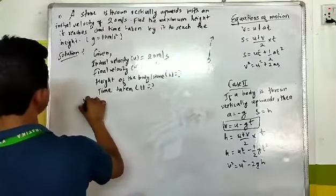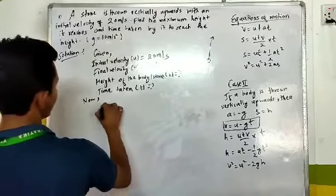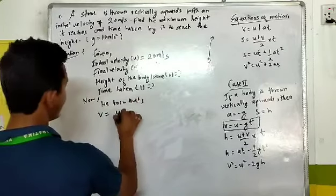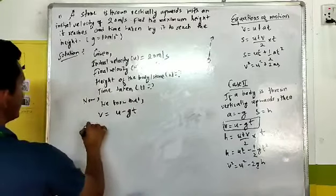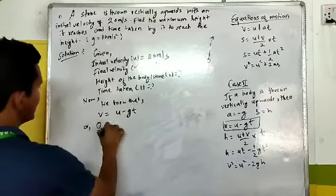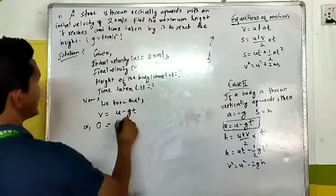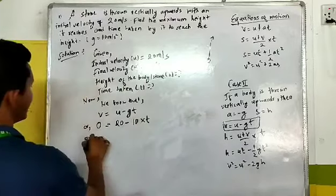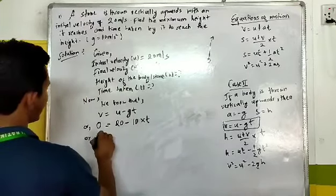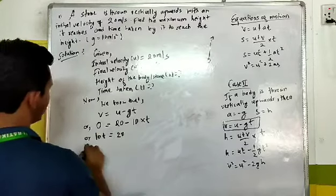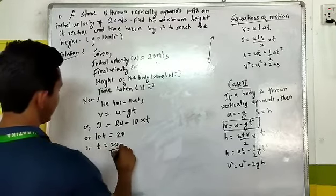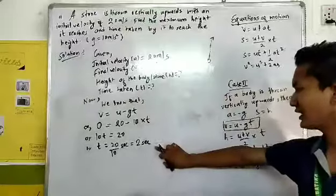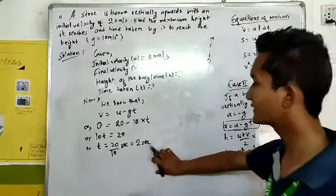As we know that V is equal to U minus gT. You can directly put down your value here. V is equal to 0, U is equal to 20 meter per second, minus g is equal to 10, and time is equal to T. By calculating, you can directly find out here T is equal to 20 by 10 second, which is 2 second. So the time taken that we have taken out is actually 2 second.